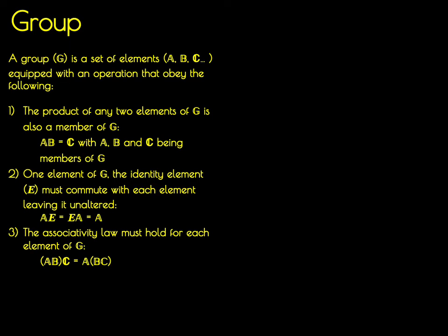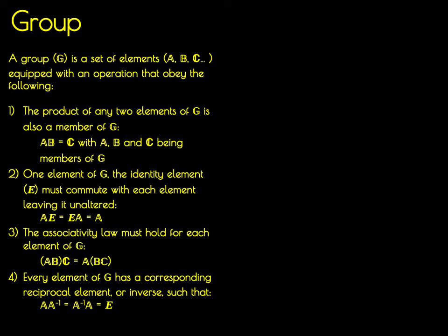The third thing is that something called the associativity law must hold for each member of group G. So if you take elements A and B and you operate them together, you get a different element of the group, you take that element and you operate it on C, that will give you the same thing as taking elements B and operating it with C, taking that element and operating it with A. The fourth thing that must hold is that every element of the group G has to have a corresponding element that is this reciprocal element, or its inverse, such that if you take that element and perform the operation with the reciprocal element, it's the same as taking the reciprocal element and performing the operation on that element itself, and that will return the identity element.